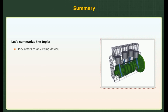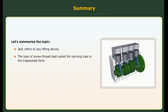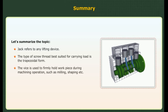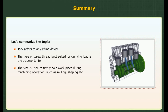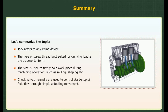To summarize the topic: jack refers to any lifting device. The type of screw thread best suited for carrying load is the trapezoidal form. A vice is used to firmly hold a workpiece during machining operations such as milling, shaping, etc. Check valves normally are used to control start or stop of the fluid flow through simple actuating movement.